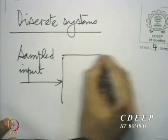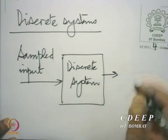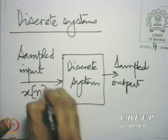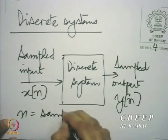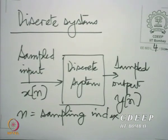We will review once again what we mean by a discrete system. A discrete system is a system where you have a sampled input and a sampled output is produced. We agreed to call this input x of n and output y of n, and we associated n with the sampling index. When we say n equal to 0, we mean the zeroth sample; when we say n equal to minus 1, we mean the minus 1 sample, or the sample at t equal to minus capital T, and so on. We agreed that the sampling instances are the same at the input and the output.